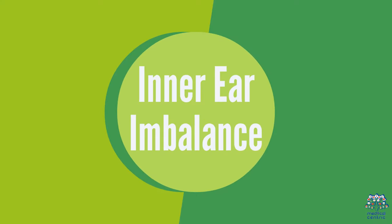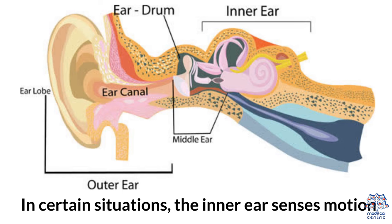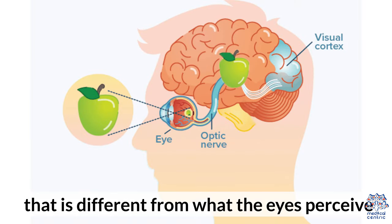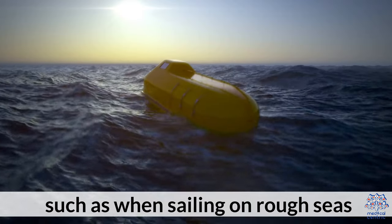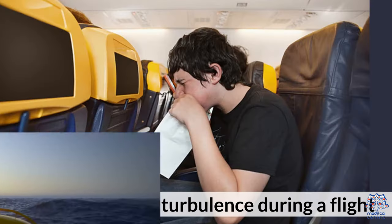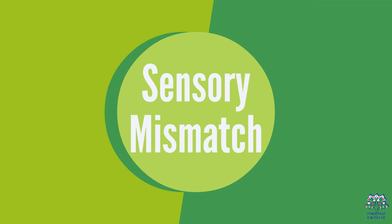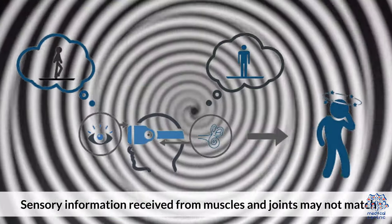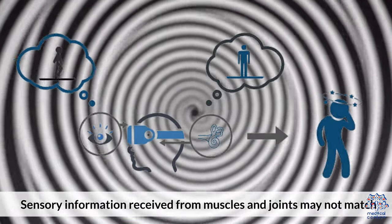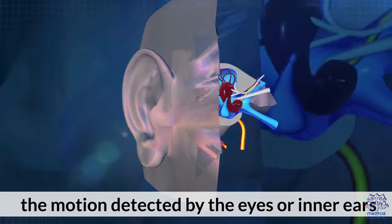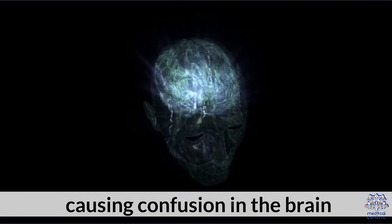2. Inner Ear Imbalance — in certain situations, the inner ear senses motion that is different from what the eyes perceive, such as when sailing on rough seas or experiencing turbulence during a flight. 3. Sensory Mismatch — sensory information received from muscles and joints may not match the motion detected by the eyes or inner ears, causing confusion in the brain.